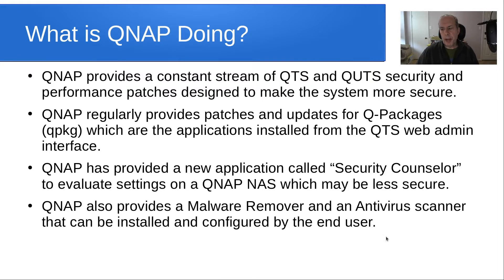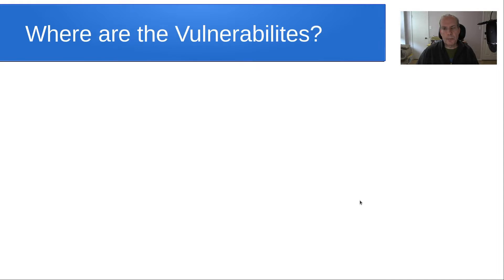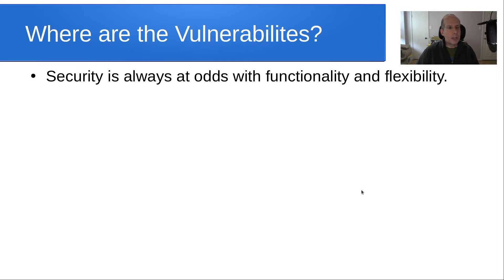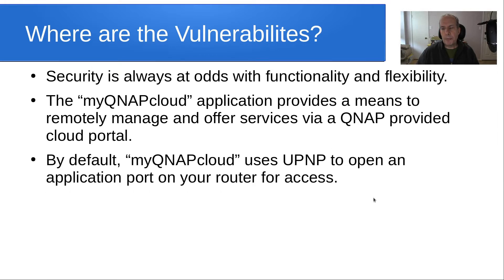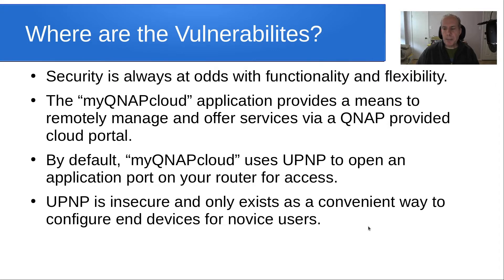QNAP also provides a malware remover and an antivirus scanner that can be installed and configured by the end user. Security is always at odds with functionality and flexibility on any system. The myQNAPcloud application provides a means to remotely manage and offer services via a QNAP-provided cloud portal. By default, myQNAPcloud uses Universal Plug and Play to open an application port on your router for access. UPnP is insecure and only exists as a convenient way to configure end devices for novice users.